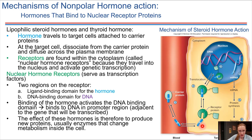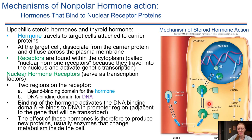Inside of the cell, there's some sort of a receptor, and receptor binding will take place in the cytoplasm. These receptors are called nuclear hormone receptors. The reason they are called nuclear hormone receptors is because once the hormone binds, this whole structure becomes activated to go into the nucleus.